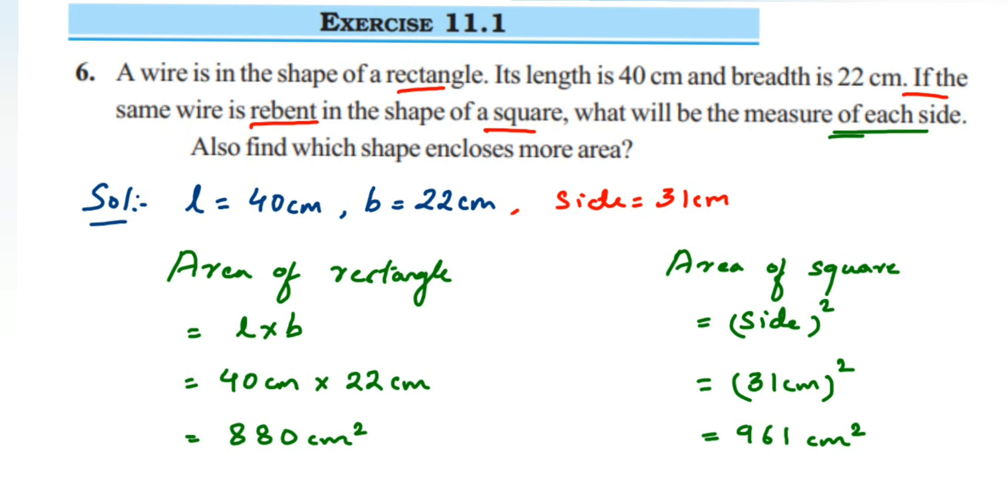Now you can compare. You can see that area of square is more as compared to area of rectangle because 961 is greater than 880. So the square encloses more area as compared to rectangle.